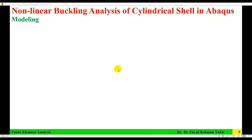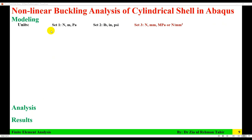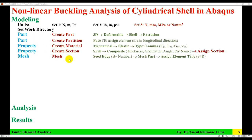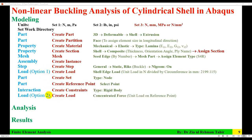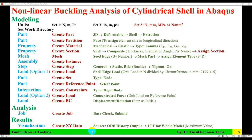The steps to perform the nonlinear buckling analysis in Abaqus include: first, modeling — which contains setting units, setting work directory, creating a part, partition, material, section, mesh, instance, step, load, and boundary condition — then creating a job, performing a data check, submitting, and finally visualization and creating XY data.